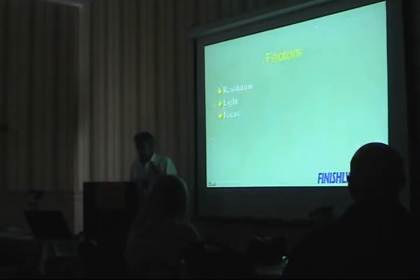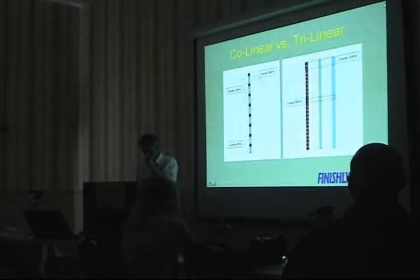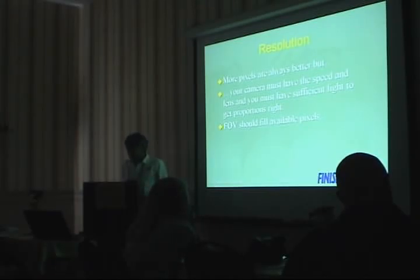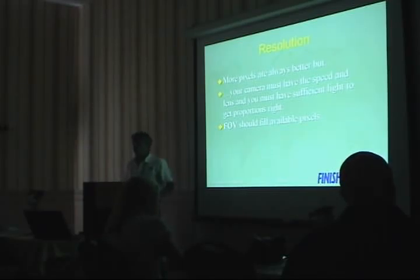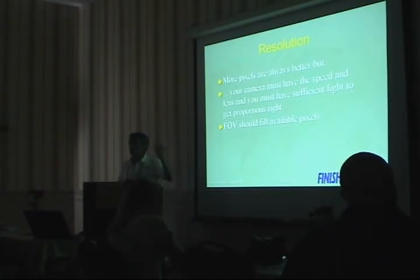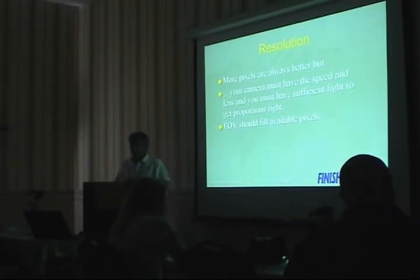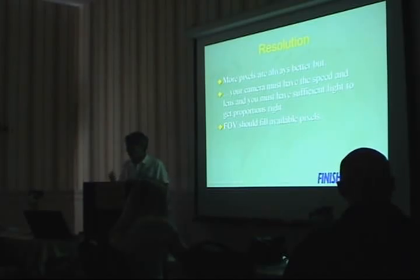Really the only caveat is that your camera has to have the speed and the lens in order to access those more pixels. You have to have sufficient light to get the proportions right. If you can get to 1,000 pixels — or even more than that with a pro camera — we have pictures from the Olympic trials where you're running 4,000 frames per second, 2,000 pixels, zoomed at 50%. If you have the light to do it, there's no particular reason not to, unless you have an old computer that can't handle files that large.